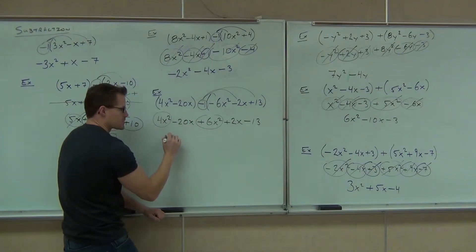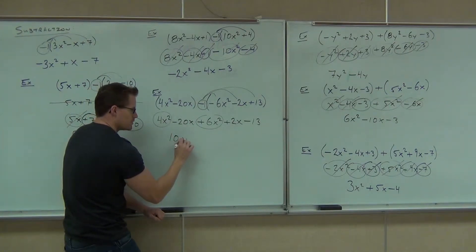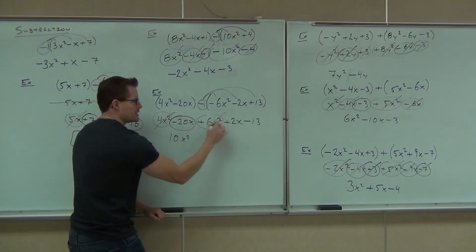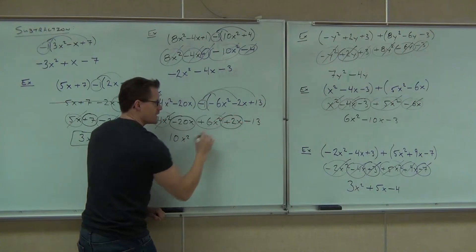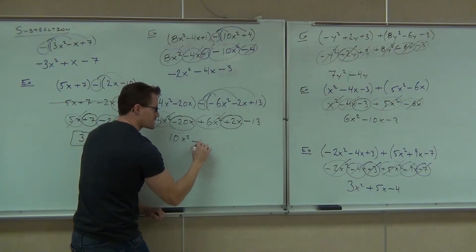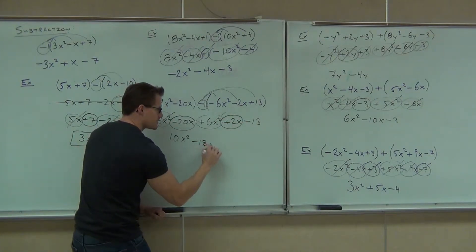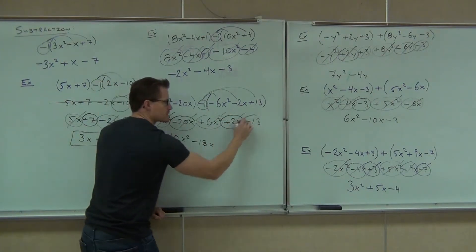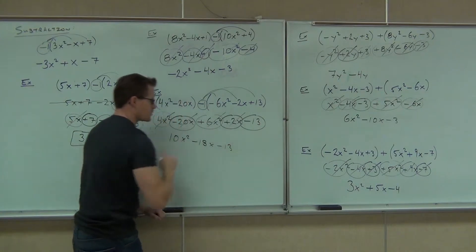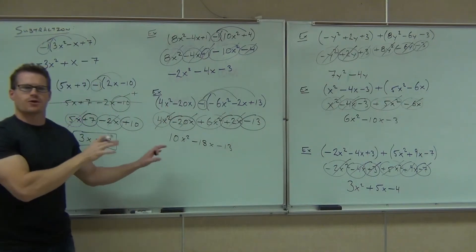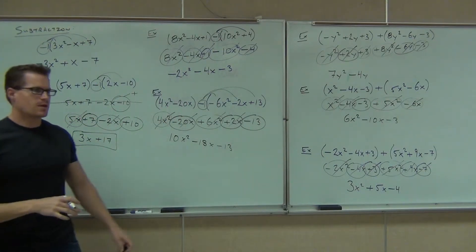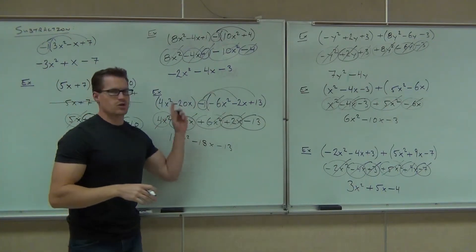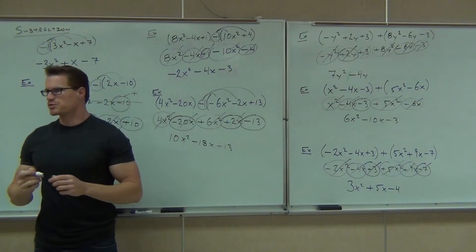I'm seeing a 10x squared. I've got a negative 18x, so I write minus 18x. And lastly, that minus 13 is hanging on to the back end there. That's as far as we can go — that's completely combined. We've just subtracted two polynomials from one another.